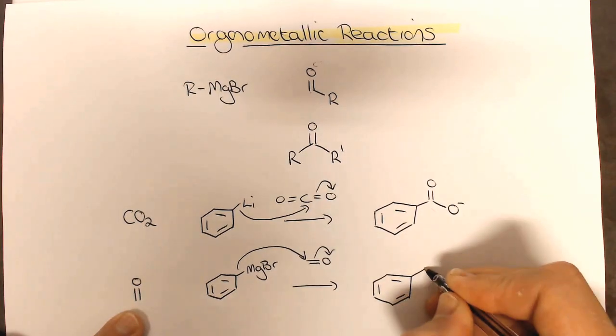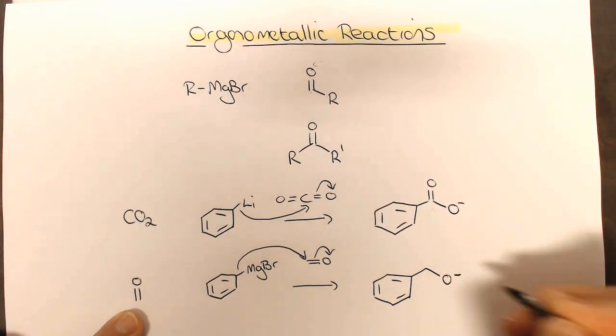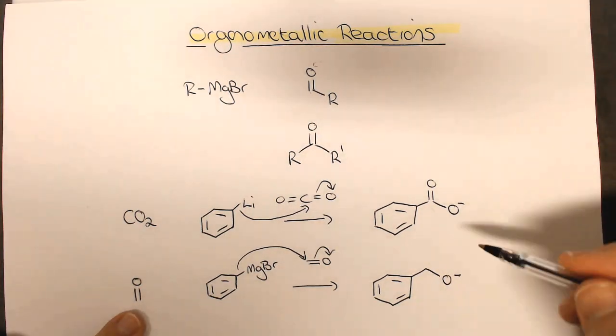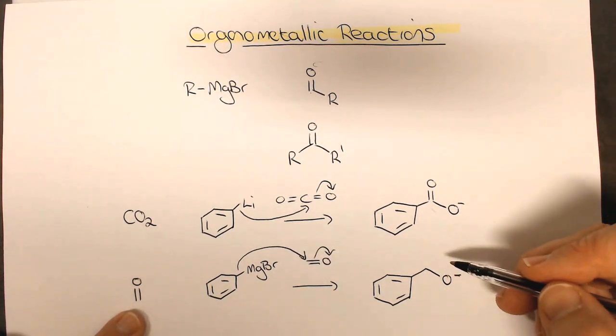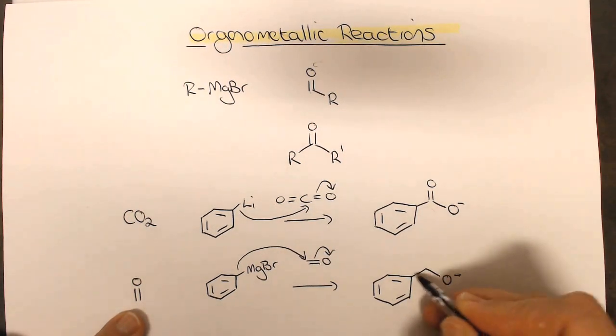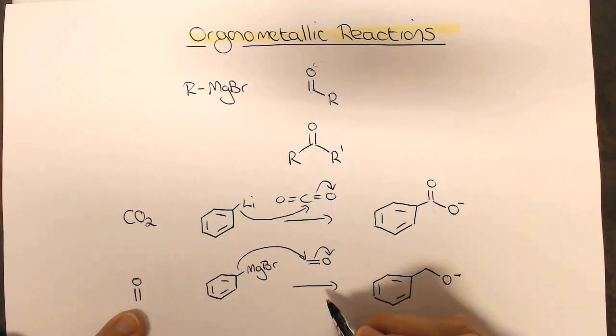And the product that we get is now the alcohol, or initially the alkoxide, but after protonation, at the end of the reaction, we'll get that. So this is very useful because it's kind of similar to the carboxylic acid, but we now end up with, it's effectively making a primary alcohol at the end of a chain. So that's quite useful.